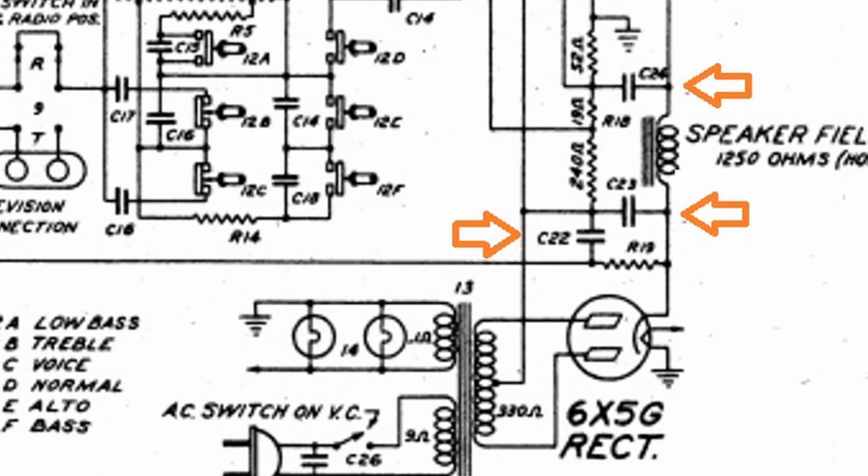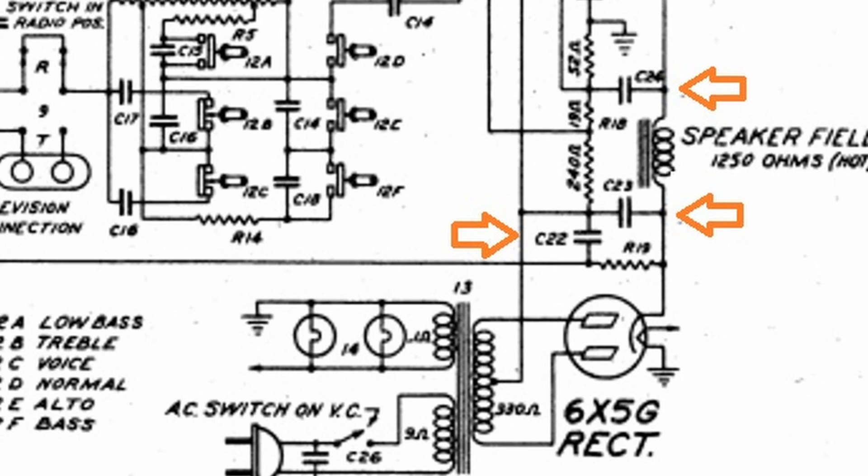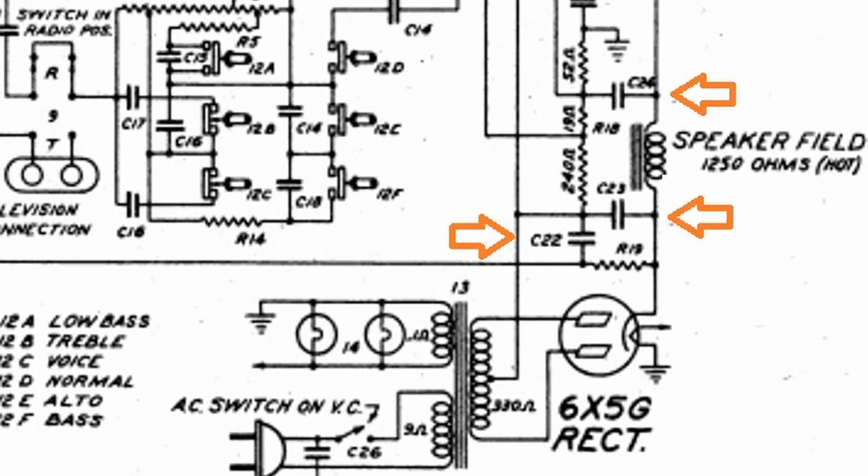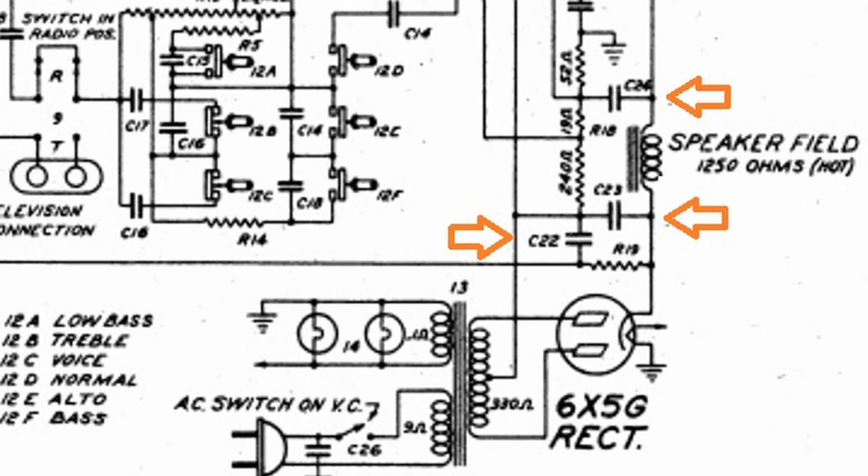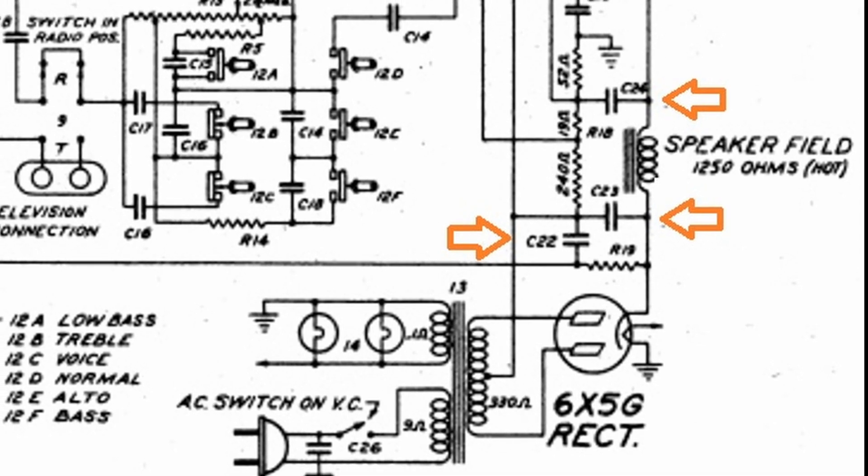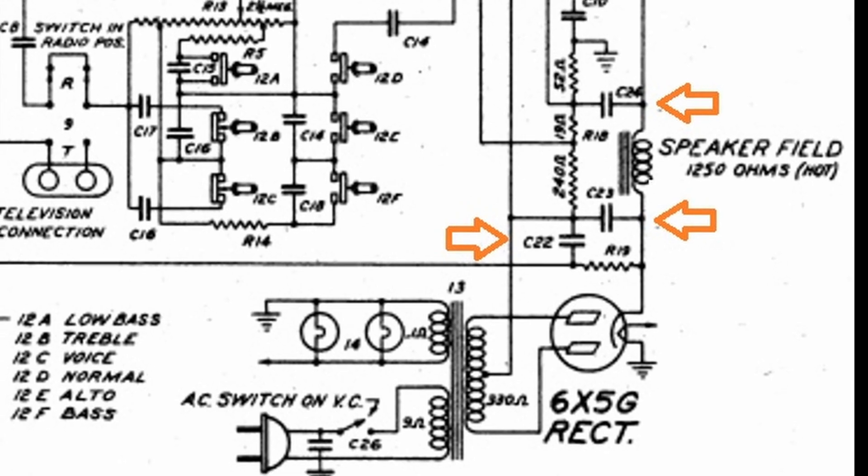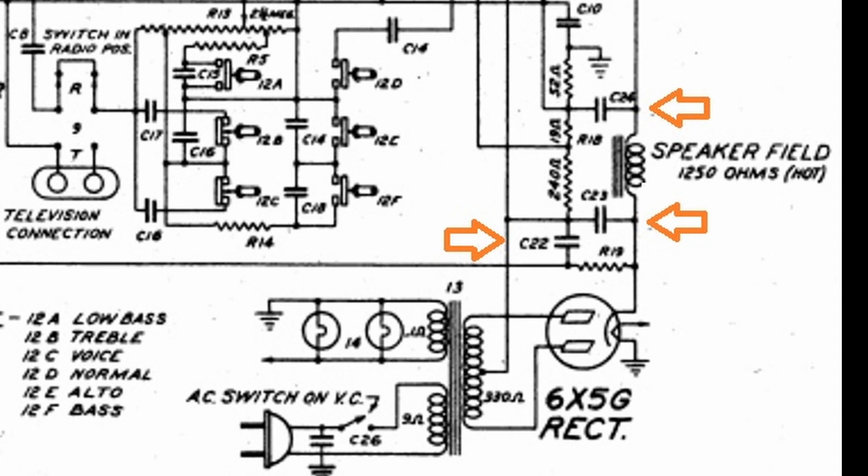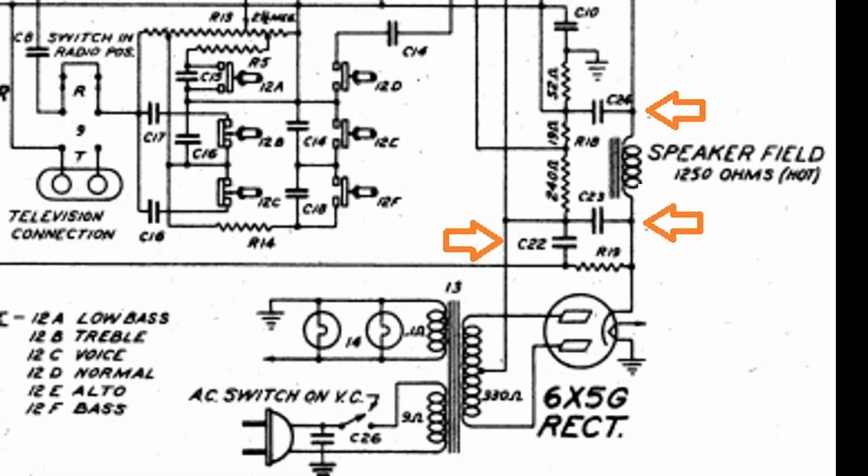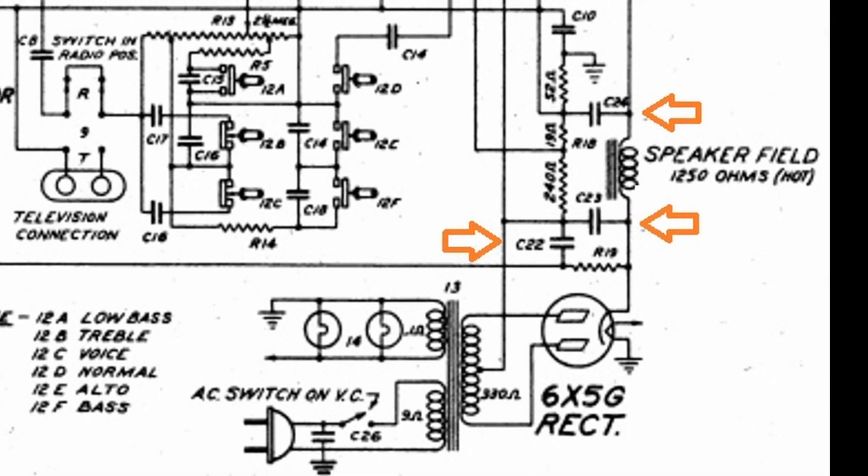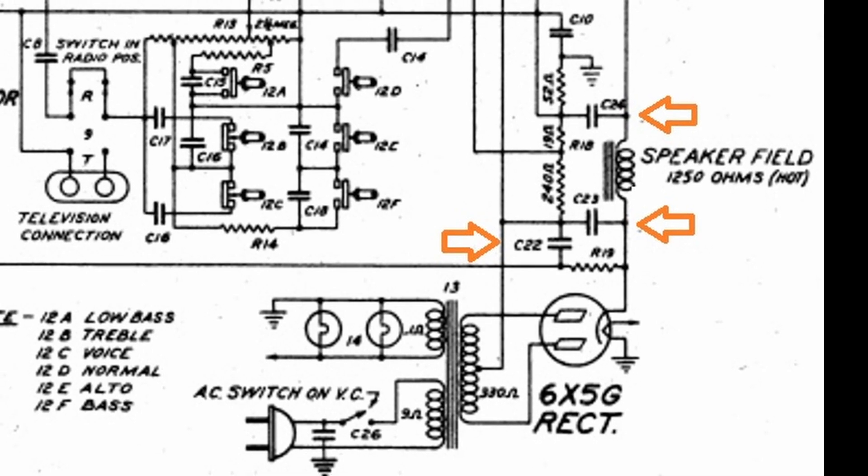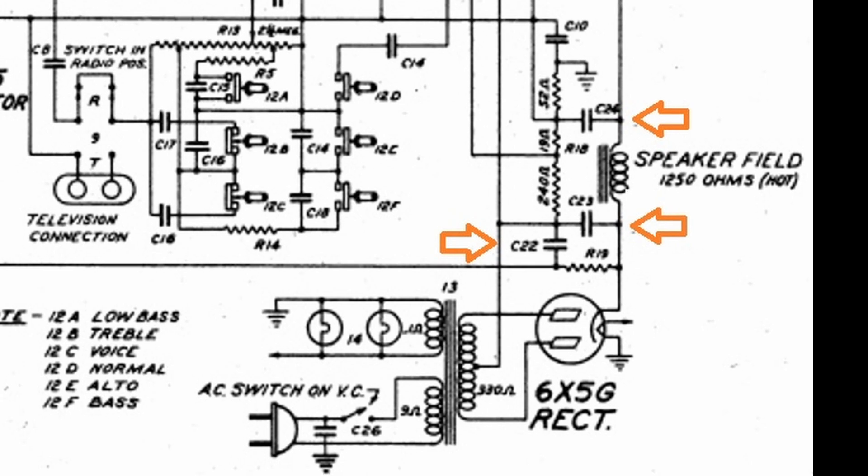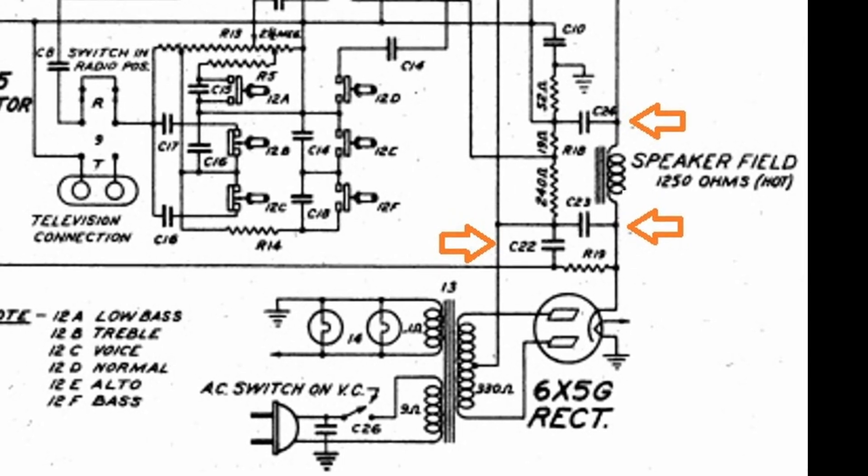In this schematic I highlighted three electrolytic capacitors. Some schematics like this do not identify the polarity of the capacitor, meaning which side is positive and which side is negative. That makes it confusing for those of you with no electronic background or doing this as a hobby.